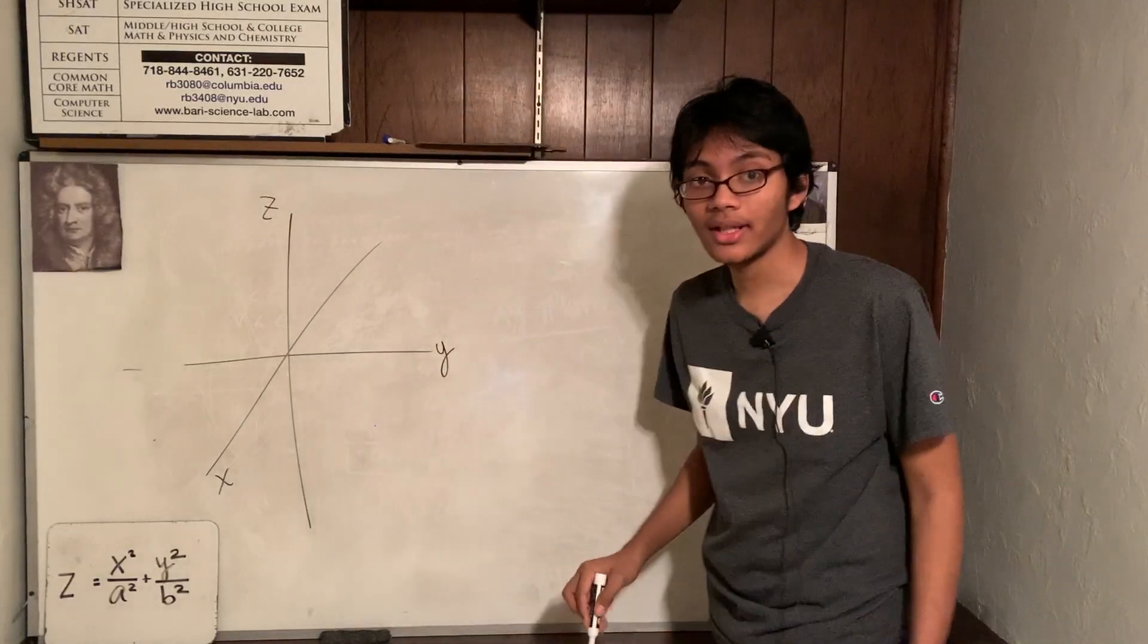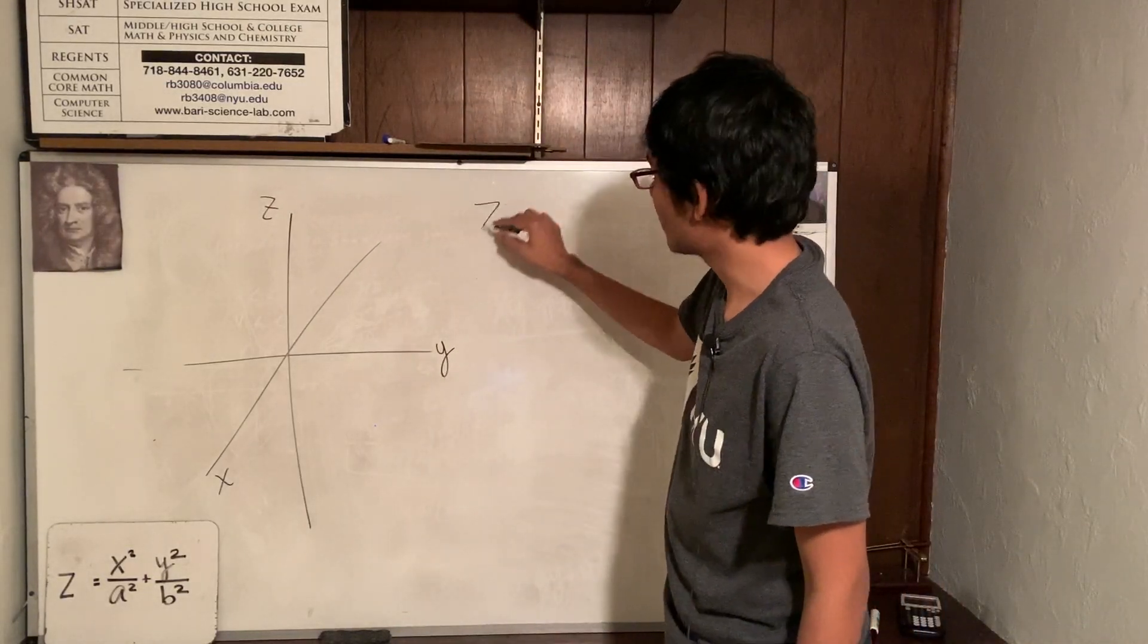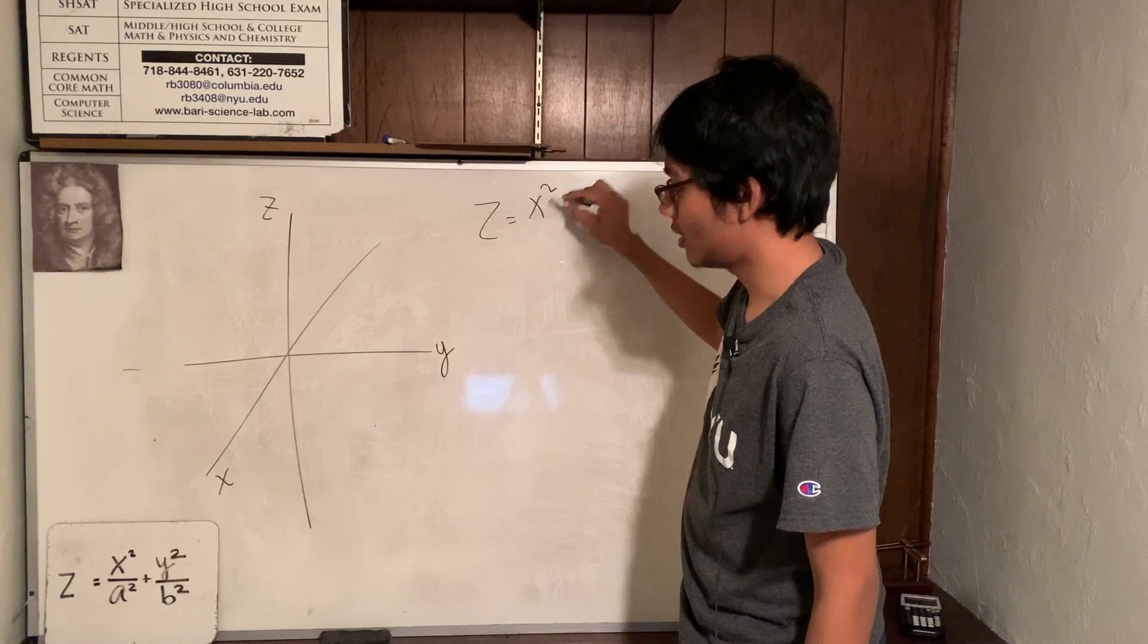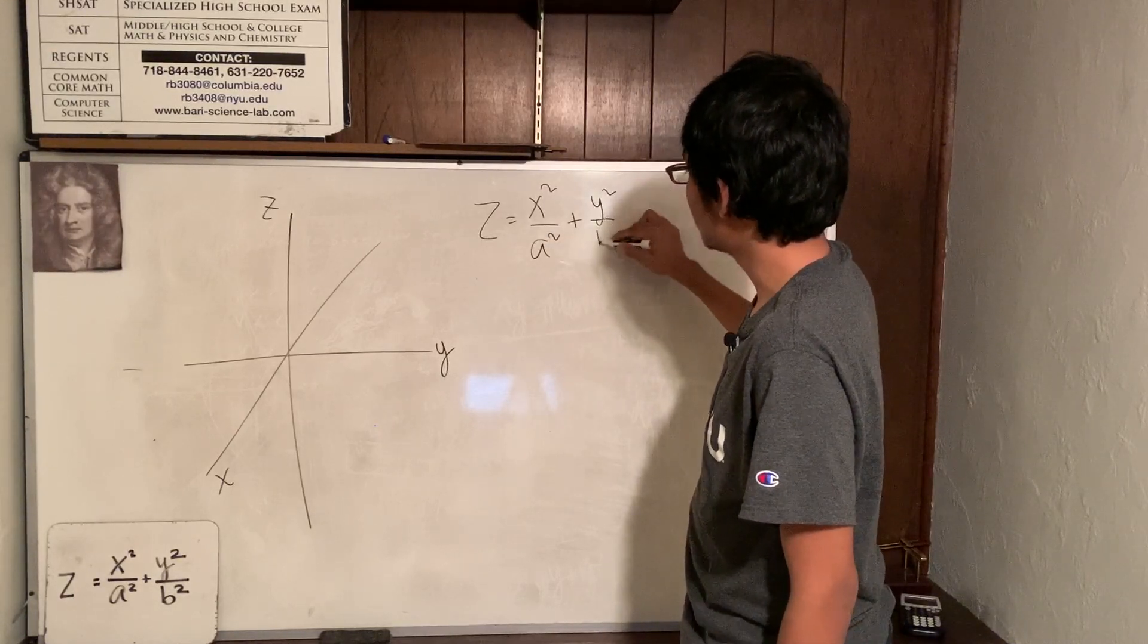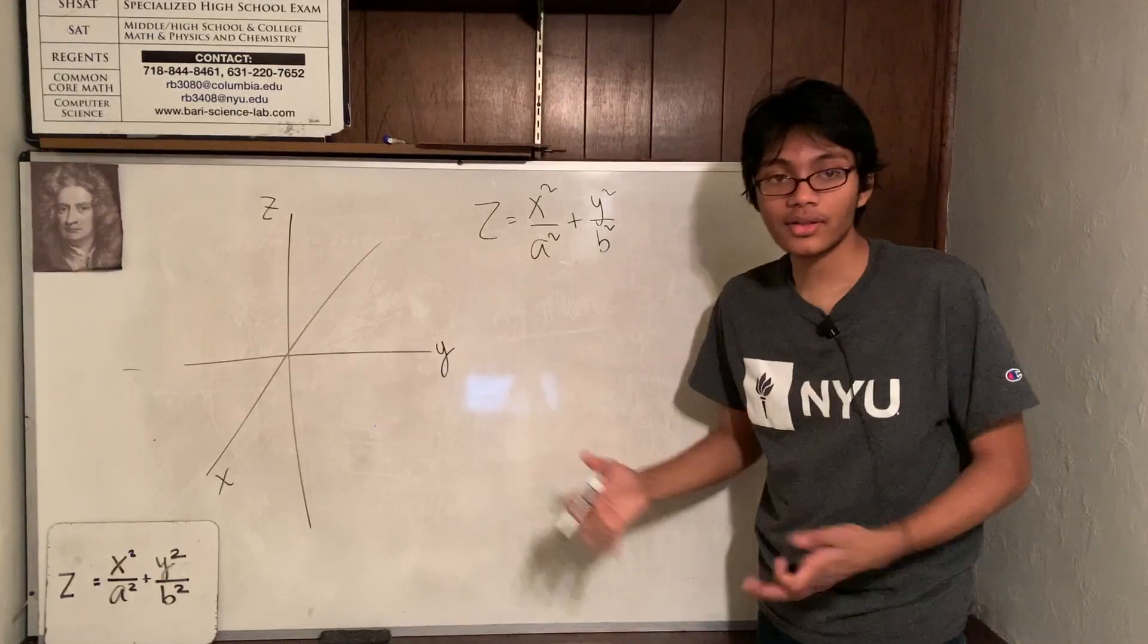Let's rewrite our equation. We got z equals x squared over a squared plus y squared over b squared. Alright, good.